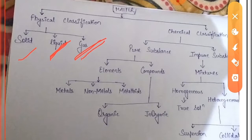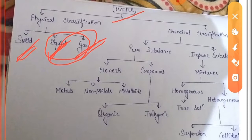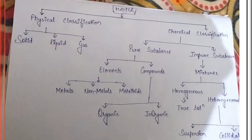Solid is a hard and rigid substance, while liquid and gases are fluid substances. So matter is physically classified into three parts: solid, liquid and gas. Now we come to the chemical classification of matter.